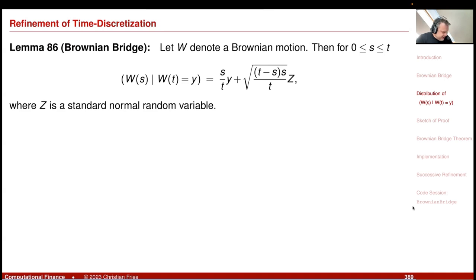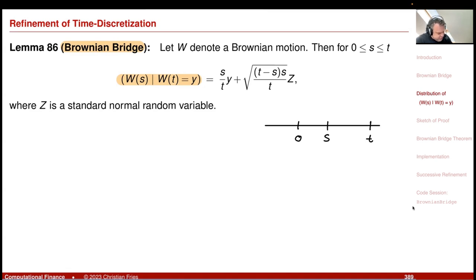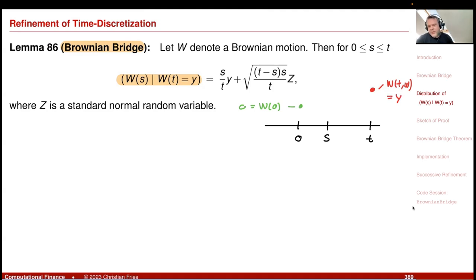I am interested in the random variable W(S) — the Brownian motion at an intermediate time S, where I start at zero and end at little t — conditional on knowing the endpoint. For a fixed sample path, this is my W at little t and omega, starting at W(0) = Y, and I would like to end at a prescribed point. How does the random variable W(S), conditional on knowing the endpoint, look?